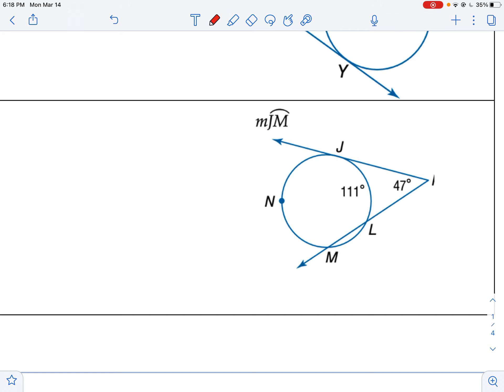And then here, my two arcs, JM and 111, should subtract to 94 degrees. So I'll add up 111 plus 94 to get 205. And I can always check my work. 205 minus 111 is 94 divided by 2 is 47 degrees. So that all works out. My answer here, that would be 205 degrees.